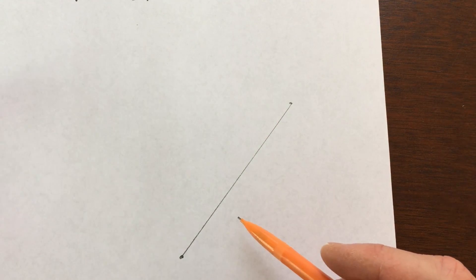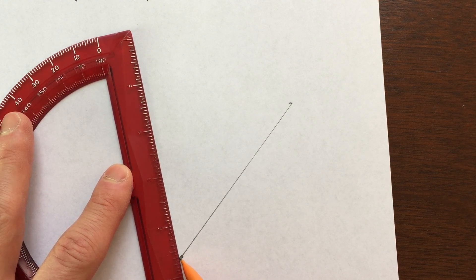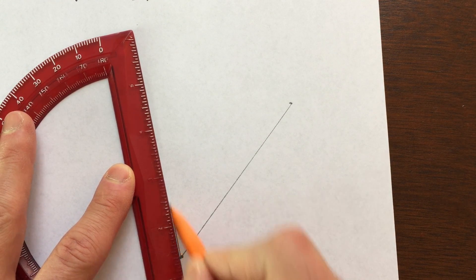So the first thing you want to do in this construction is you want to draw another line using one of the endpoints. So I'm going to go ahead and draw a line like this.